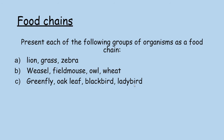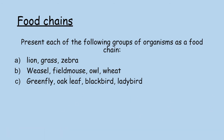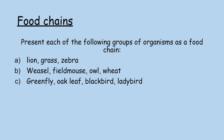Let's construct some food chains. Grass → zebra → lion. Wheat → field mouse → weasel → owl. Oak leaf → greenfly → ladybird → blackbird. Always look for the producer to start you off.